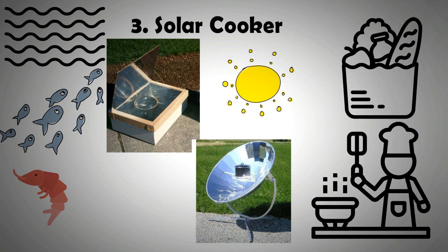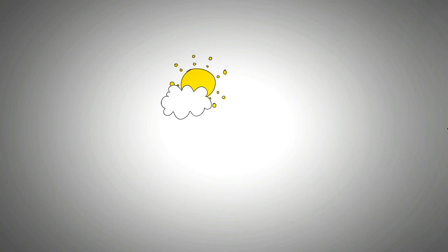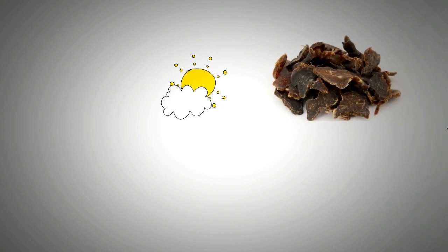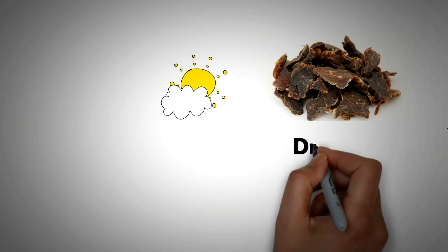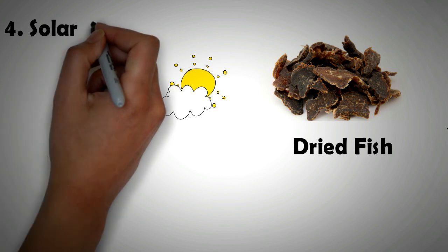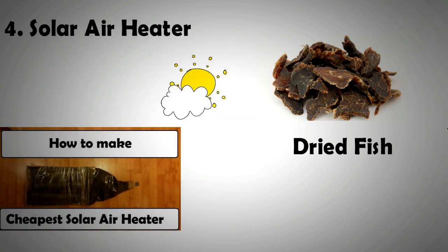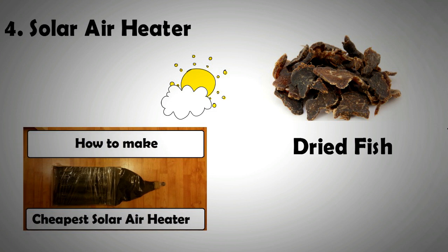To be prepared for cloudy days there should be edible food in store and for this purpose one can dry or dehydrate fish meat to prevent spoilage and store it for long term. For drying food one can make a solar air heater. Note that on this channel we have already shown you how to make a simple solar air heater in under an hour and for less than $5. The link for the video is in the description section.